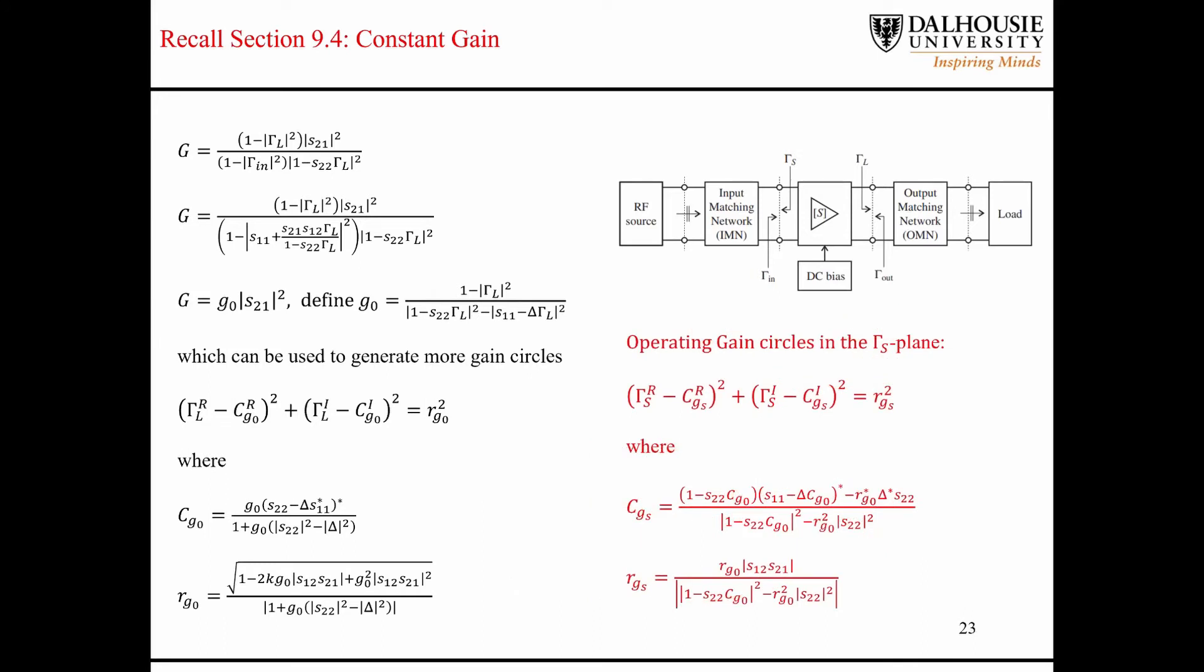At the end of the day, we end up with another set of circles, but this time our circles reside in the gamma s plane. So these operating power gain circles are compatible with the noise figure circles for use in the gamma s plane.